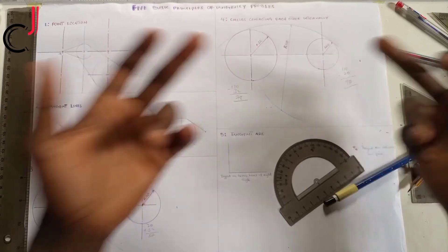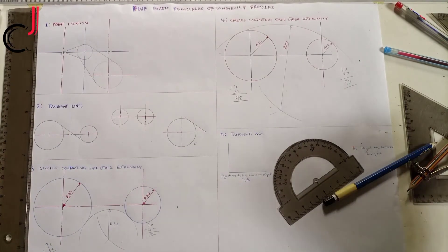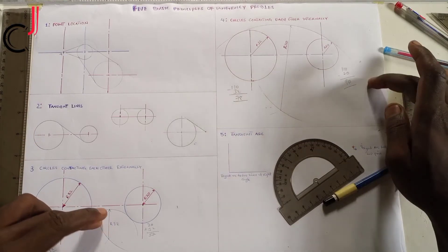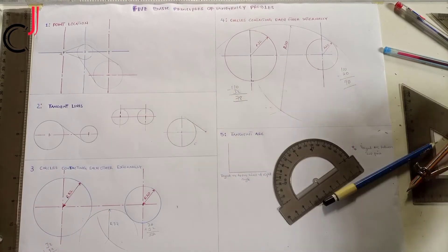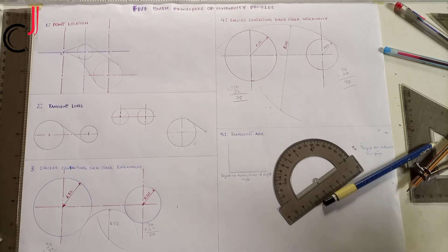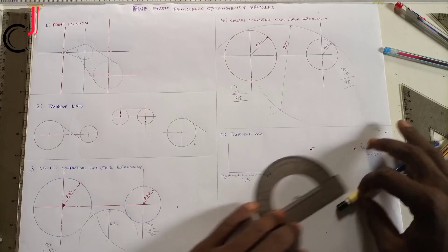You need to understand that in every tangency problem, the major work you see comes from principle number three and principle number four, because most tangency problems involve circles touching each other externally and internally. First observe your tangency problem, then attempt it.